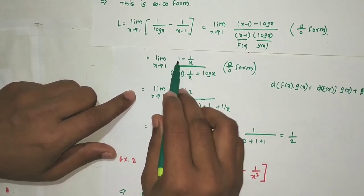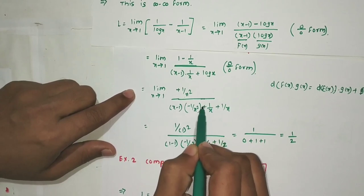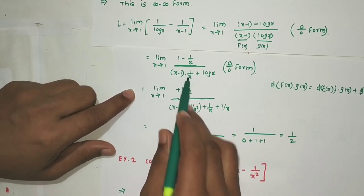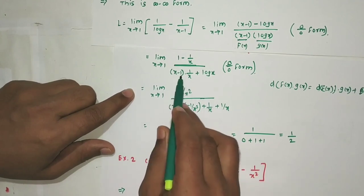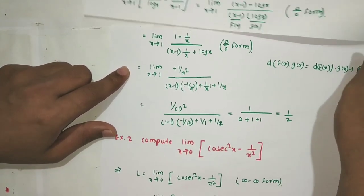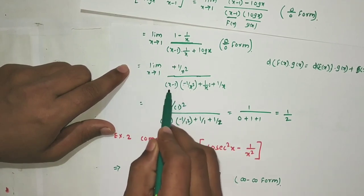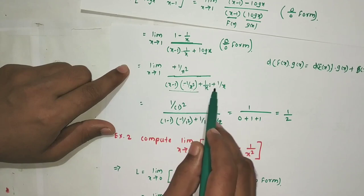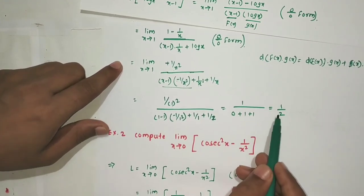Second application of L'Hôpital's rule: derivative of numerator (1 - 1/x) is 1/x². Derivative of denominator [(x-1)/x + ln(x)] using product rule gives [(x·(1/x) - (x-1)·(1/x²)) + 1/x] = [1/x + (x-4+1)/x²]. After putting x=1: numerator = 1. Denominator = 1/1 + (1-1)·(-1/1) + 1/1 = 1+0+1 = 2. So the final answer is 1/2.